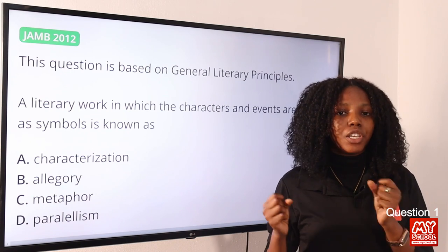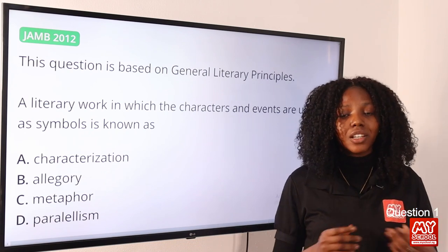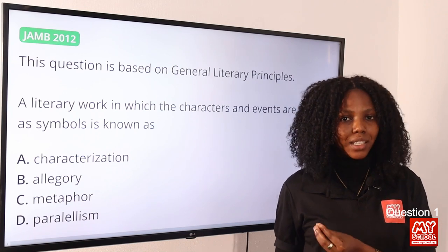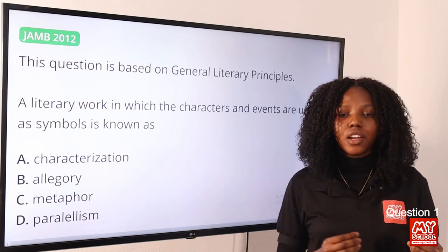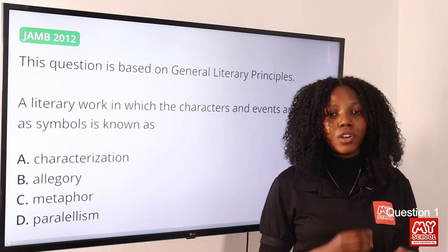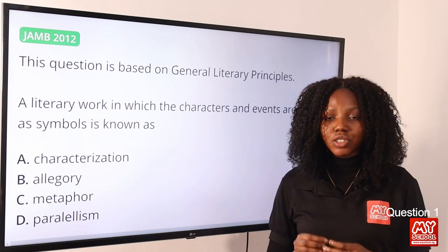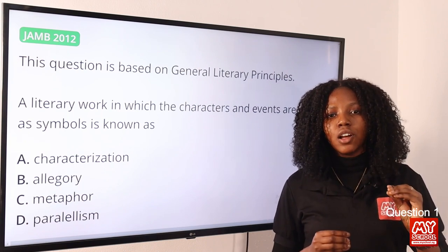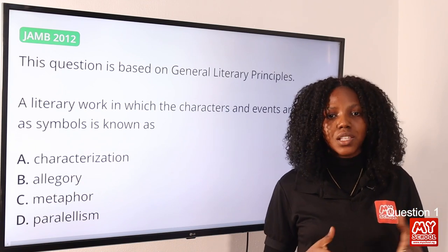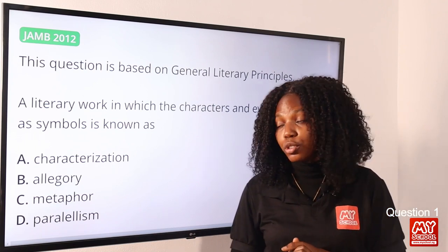Allegory is symbolic because it represents something not obvious but carries a hidden meaning. Option A, characterization, is the way an author describes what a character is like — their personality. Metaphor is a direct comparison: A equals B. Parallelism refers to sameness in sentence or grammatical structure. So the answer to question one remains option B, allegory.